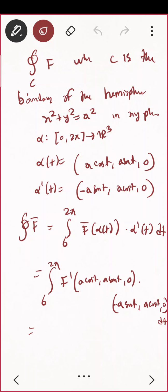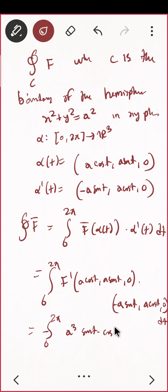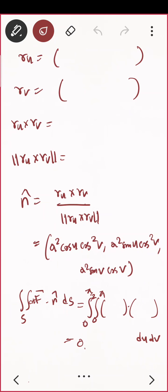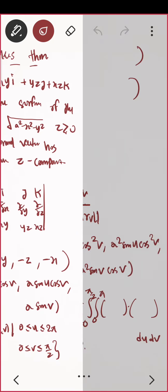After substituting, F(alpha(t)) = (e² sin t cos t, 0, 0) dotted with (-e sin t, e cos t, 0) gives minus e² sin t cos t in the first term. Solving the integration from 0 to 2pi of sin t cos t dt, this also equals zero. Both sides match, verifying the theorem.